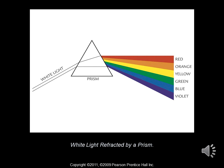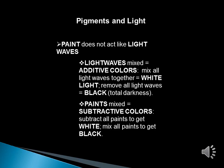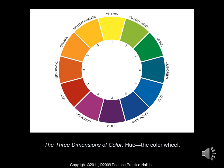Here's an example of white light refracted by a prism. When white light enters a prism and exits on the opposite side it presents all the colors of the color spectrum: red, orange, yellow, blue, green, and violet. When we're talking about pigments and light, paint does not act like light waves. Light waves mixed equals additive colors — mix all light waves together and it equals white light; remove all light waves and it equals black, total darkness. But with paints when we mix them all together it equals subtractive colors — subtract all paints to get white, mix all paints to get black.